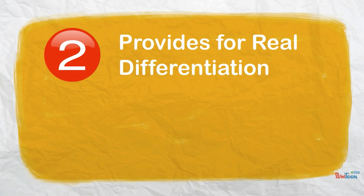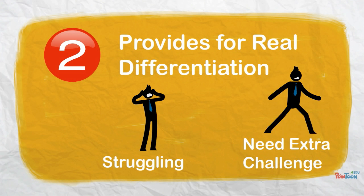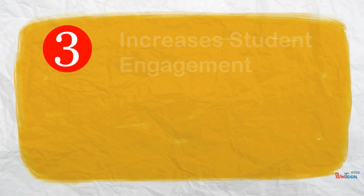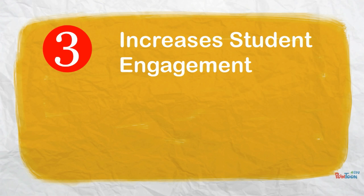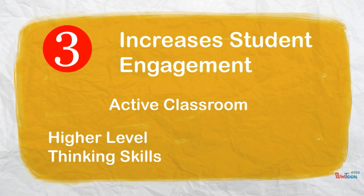Number two, flipping your class really provides for real differentiation — for students who are struggling and also for students who need the extra challenge. By providing this real differentiated instruction, all students can benefit from flipped learning. And finally, number three, it increases student engagement. Taking your classroom and turning it into a very active environment focused on higher-level thinking skills increases student engagement and student ownership of their own learning.